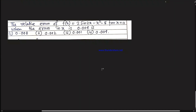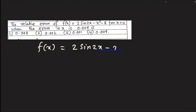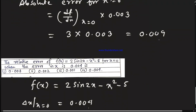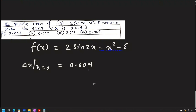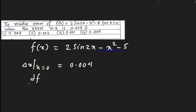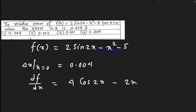Another problem: find the relative error of f(x) = 2 sin 2x − x² − 5, at x = 0, when the error in x is 0.004. The absolute error is computed; the relative error result is 0.003. Option 1 is the right option.